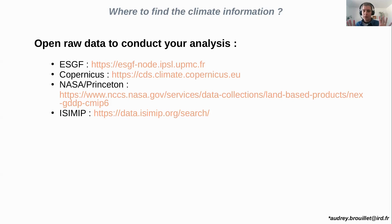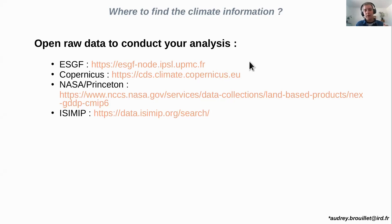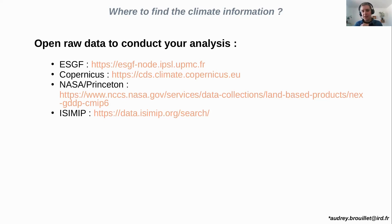I'm distinguishing both kinds of access. Here is a list of four major web portals. ESGF and Copernicus provide similar kinds of data. Copernicus provides as much observational as simulated projected future simulation data in terms of climate.